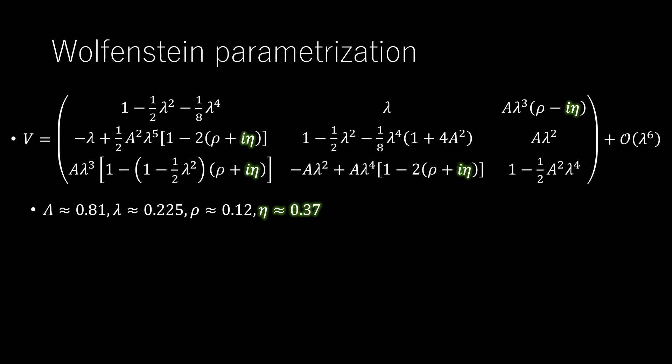However, this is probably not the complete story on CP violation, because the matter-antimatter asymmetry observed in the universe requires CP violation at a level several orders of magnitude larger than that needed to account for meson decays.